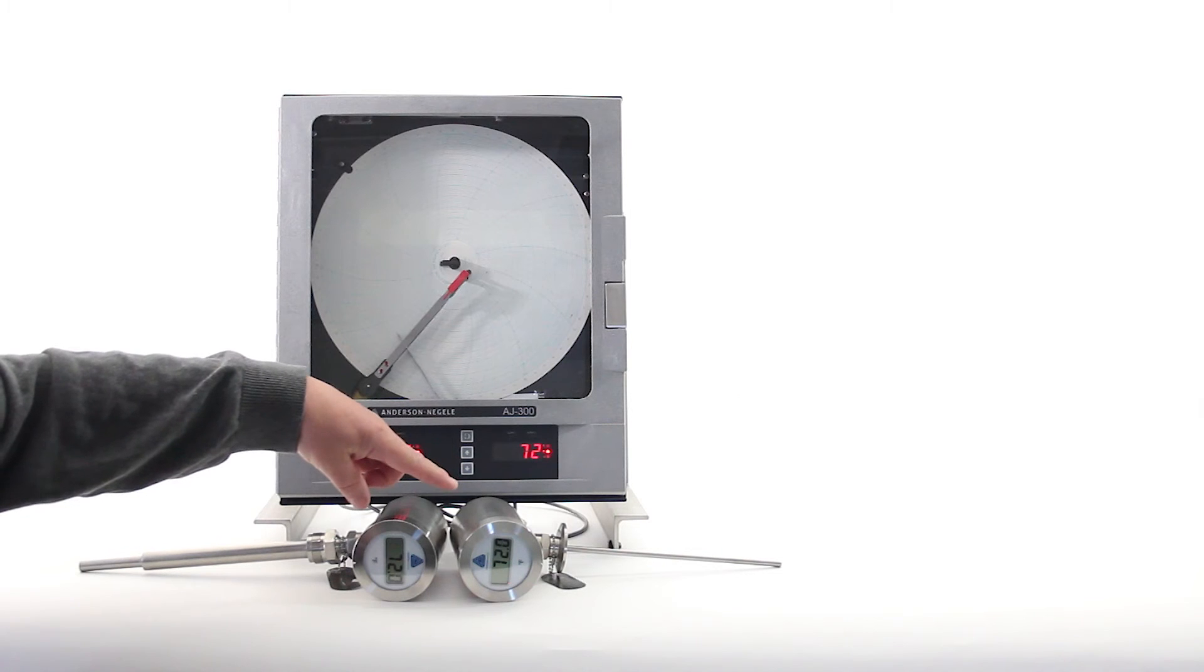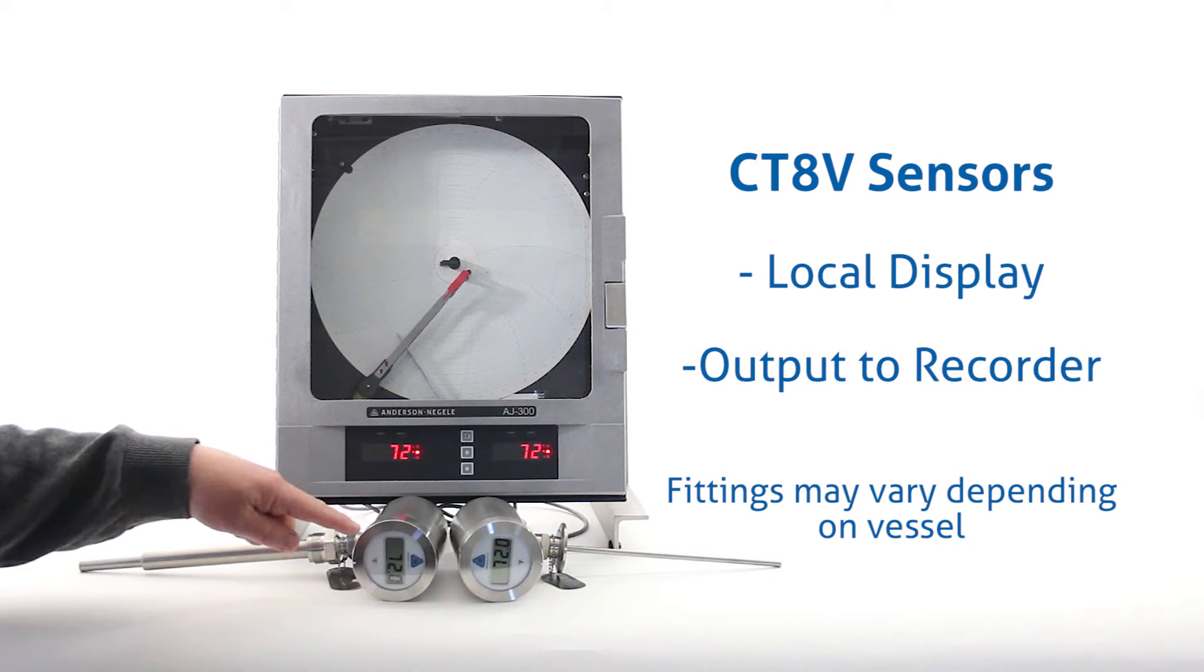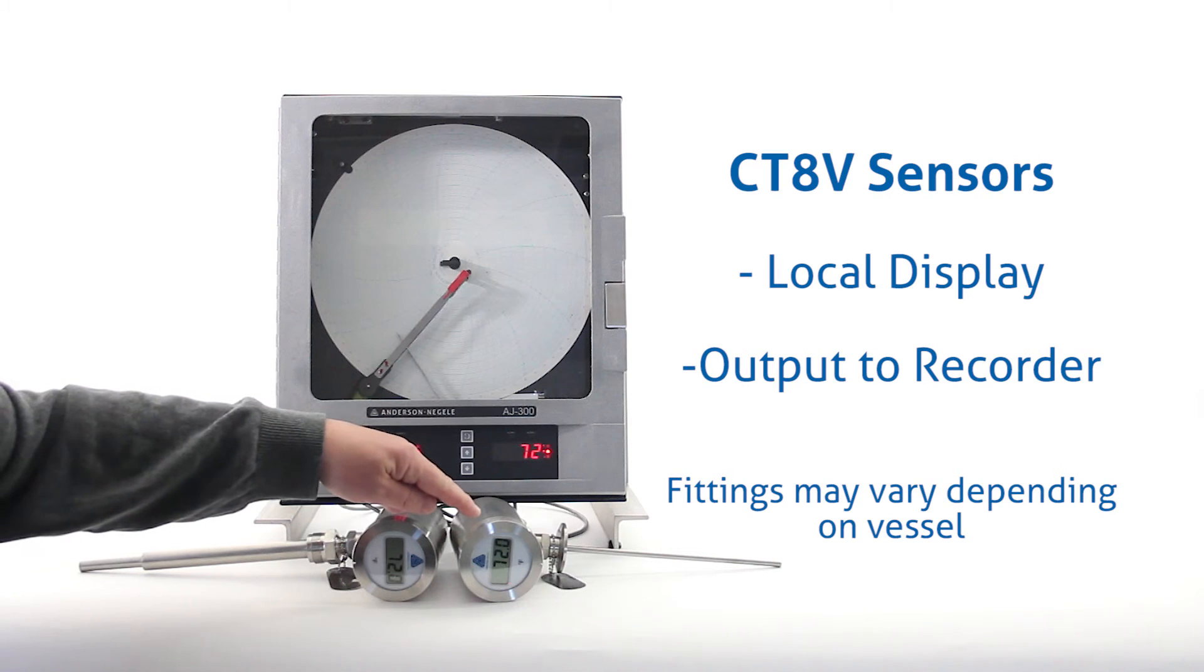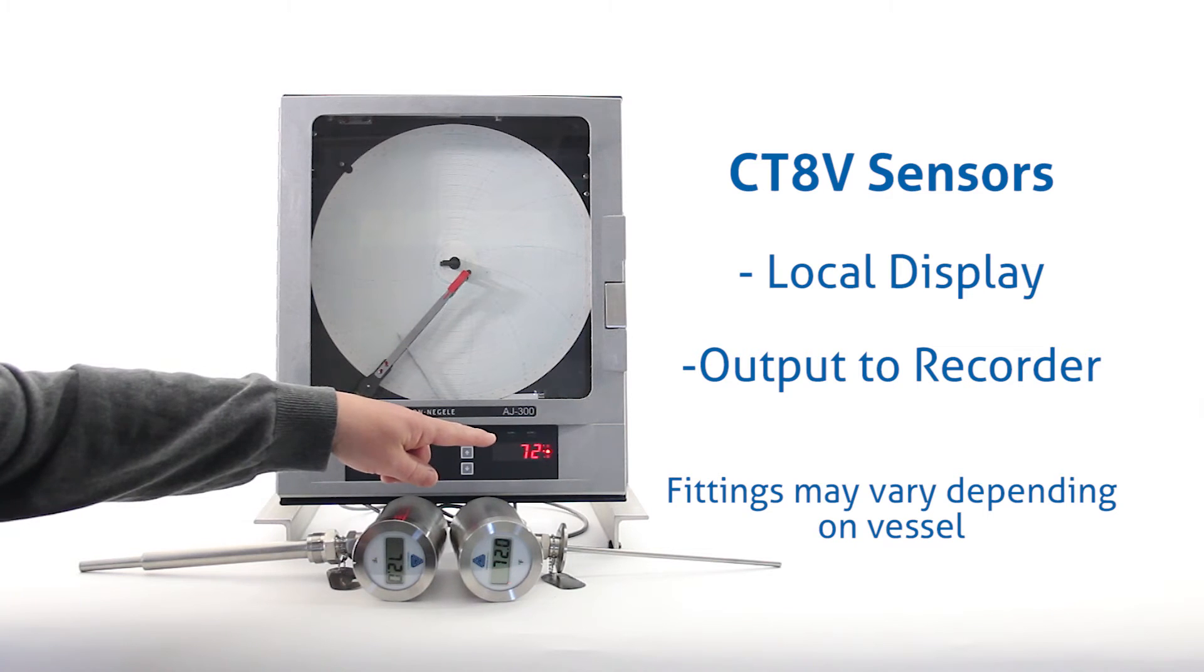Next, we have the two CT8V sensors. The product sensor provides a local display of the product temperature and sends a signal out to the recorder. The airspace sensor provides a local display of the airspace temperature and also sends a signal out to the recorder.